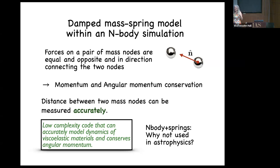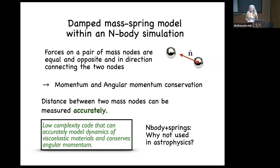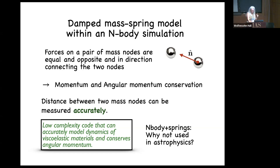This means I can measure extremely small deformations — tidal forces are usually really small. It's a low-complexity code that accurately conserves angular momentum and lets you model the dynamics of viscoelastic materials. Then the question arose: why was it not used in astrophysics? This was a concern — usually when you come up with something simple, there's a reason. But I worried about this for a long time and it's actually a good idea — I can say pretty much for sure now.